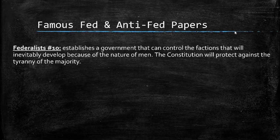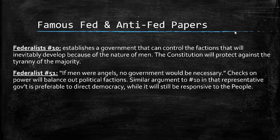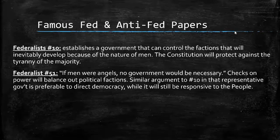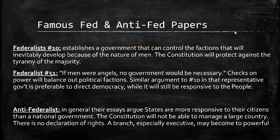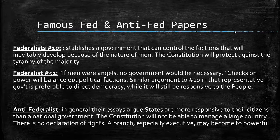Federalist No. 10 argues that the Constitution establishes a government that can control the factions that will inevitably develop because of the nature of men, and the Constitution will protect against the tyranny of the majority. Federalist No. 51 has the famous quote, 'If men were angels, no government would be necessary.' It argues that checks on power in the various branches of government will balance out political factions, and that representative government is preferable to direct democracy while still being responsive to the people. The Anti-Federalists argued in their essays that states are more responsive to their citizens than a national government, and the Constitution will not be able to manage a large country. They also worry about tyranny, complain there is no declaration of rights in the Constitution, and that the executive branch may become too powerful. In the end, the Constitution will be ratified, but the arguments of both Federalists and Anti-Federalists will live on.